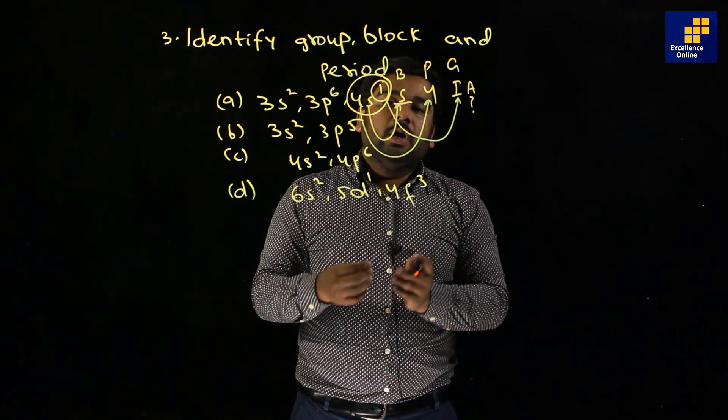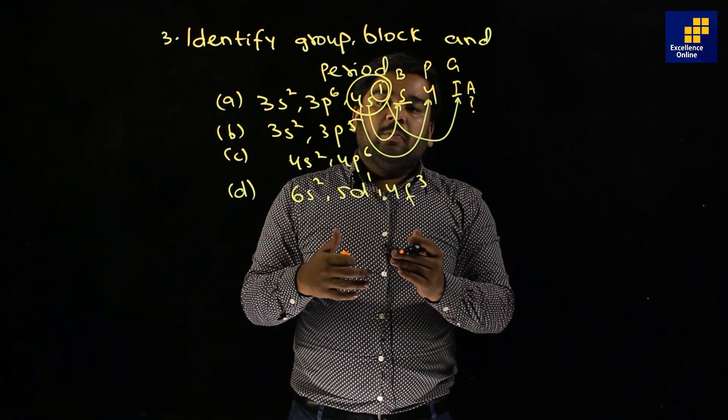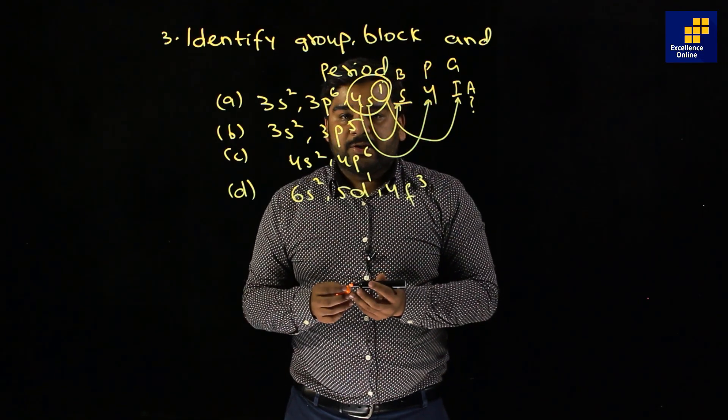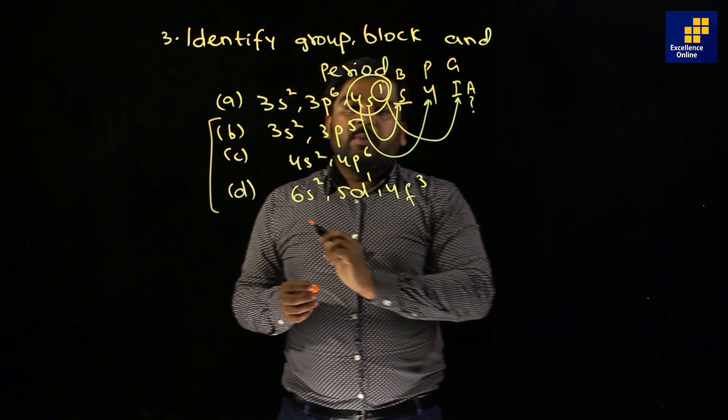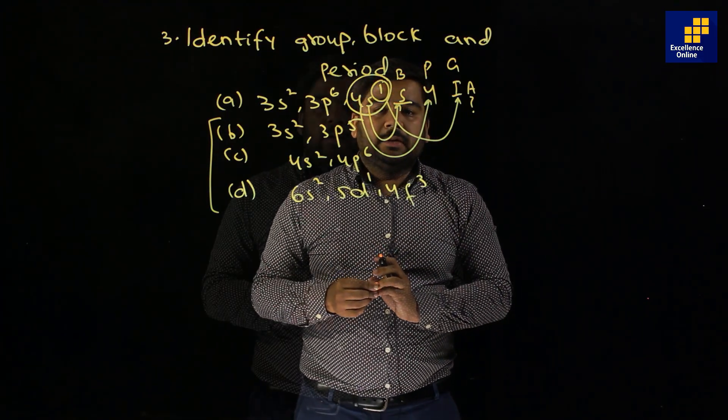When S and P block fill, then group A — representative. And when D and F fill, then group B — transition elements. We hope that these solutions are helpful. These are descriptive questions from lectures 1, 2 and 3, which cover the modern periodic table and electronic configuration. We have S block, P block, D block, and F block charts to explain.